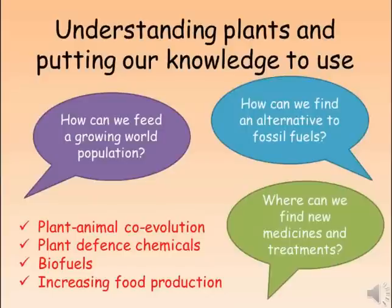We'll look at how plants and animals have co-evolved and how humans can use some of the chemicals that plants have evolved as defense against herbivores. We'll look at how plants can be grown to use as biofuels and some of the advantages and disadvantages of this, and we'll also look at how we can increase the amount of food produced globally in response to an increasing world population.